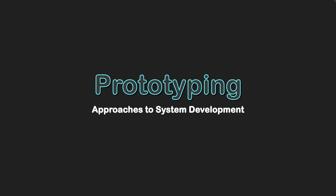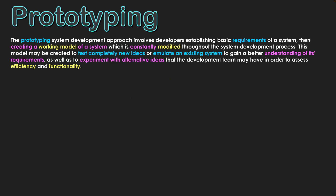Approaches to system development: Prototyping. The prototyping system development approach involves developers establishing the basic requirements of a system, then creating a working model of a system which is constantly modified through the system development process. This model may be created to test completely new ideas or emulate an existing system to better understand its requirements, as well as to experiment with alternative ideas in order to assess efficiency and functionality.